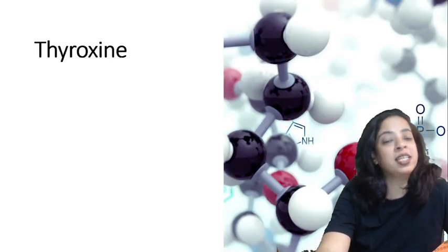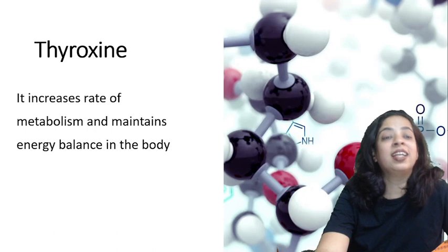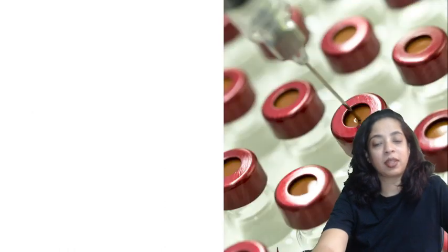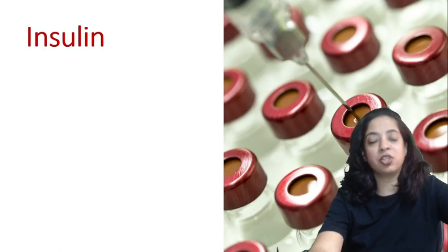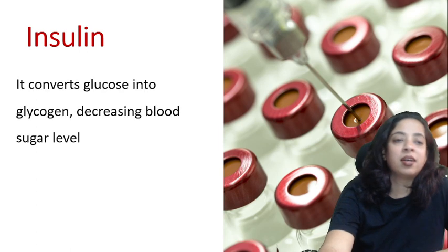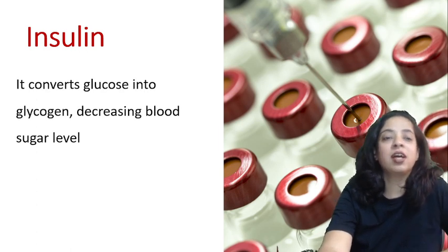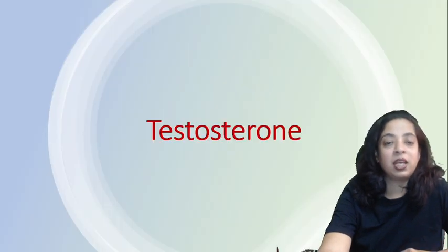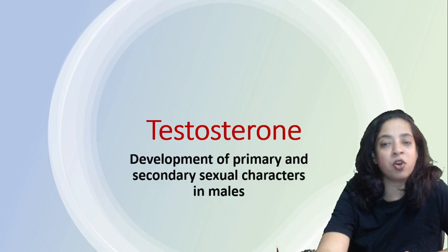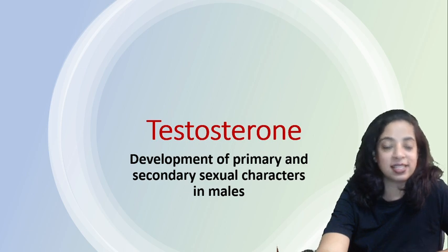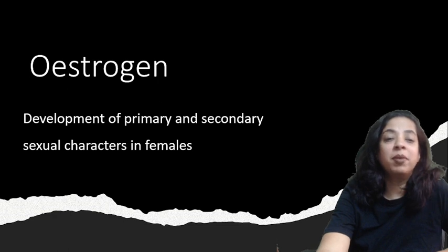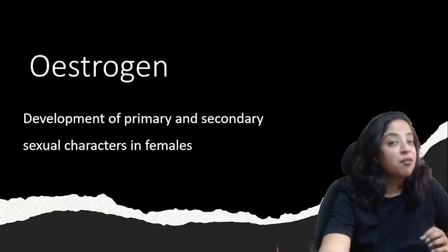What is the function of thyroxine? It increases the rate of metabolism and maintains the energy balance in the body. What is the function of insulin? It converts glucose into glycogen and hence decreases the blood sugar level. What is the function of testosterone? Development of primary and secondary sexual characters in males. What is the function of estrogen? Development of primary and secondary sexual characters in females.